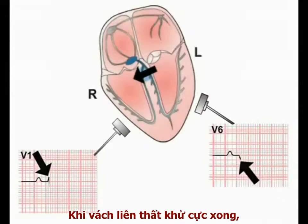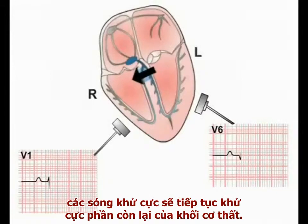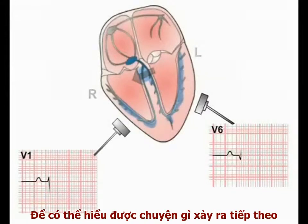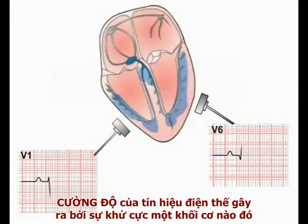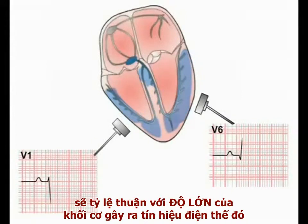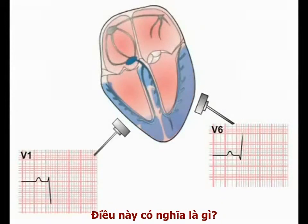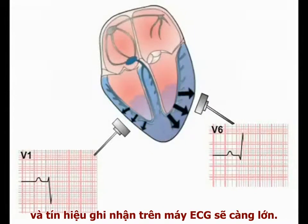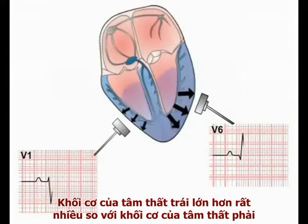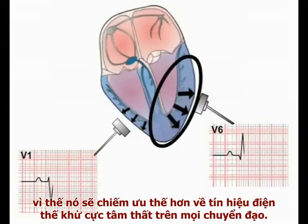As the septum continues to depolarize, the depolarization wave spreads out over the muscle mass of the ventricles. It is important to realize that the magnitude of the electrical signal generated by depolarizing muscle is directly proportional to the mass of muscle generating it. The more muscle present, the more electrical signal generated, and the more signal the ECG machine detects. The left ventricle has a much greater muscle mass than the right, and so dominates the electrical signal of ventricular depolarization in all leads.